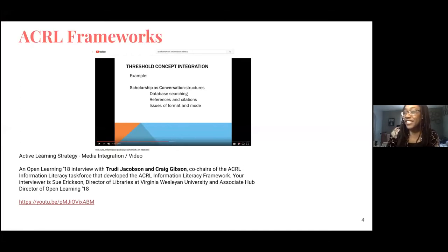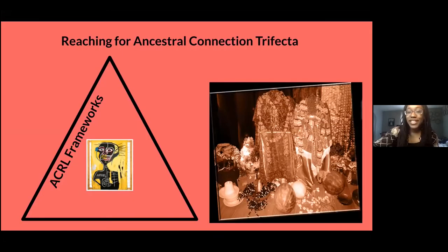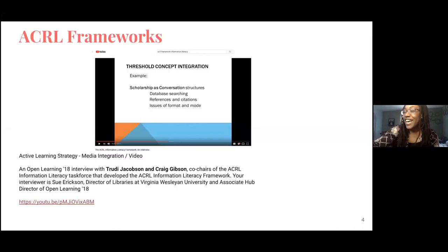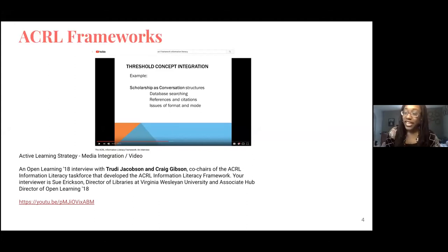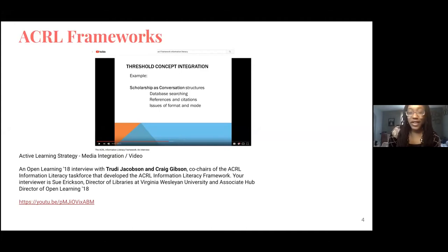The Association of College and Research Libraries is a national institution that is what librarians technically join. They just had their annual conference online, which is exciting. Within the ACRL, they've created a framework for information literacy for higher education, and it was adopted in 2016.